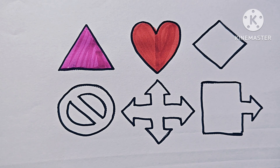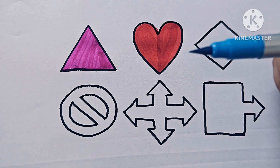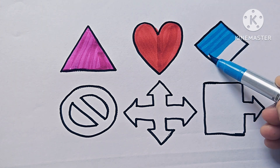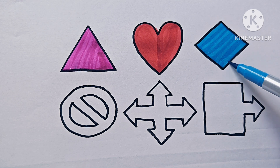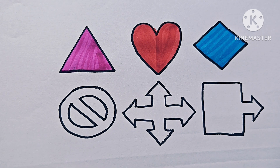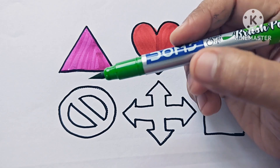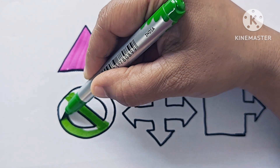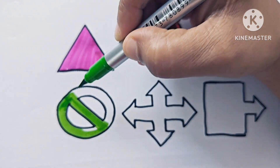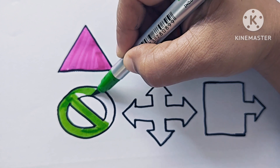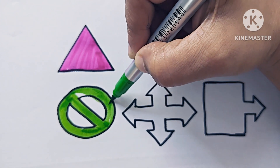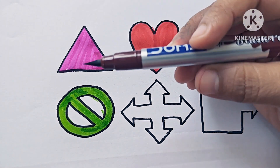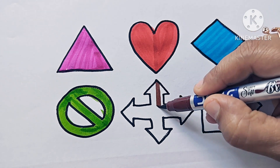This shape is rhombus, or diamond, and the color is sky blue. This is the not allowed symbol, and the color is light green.